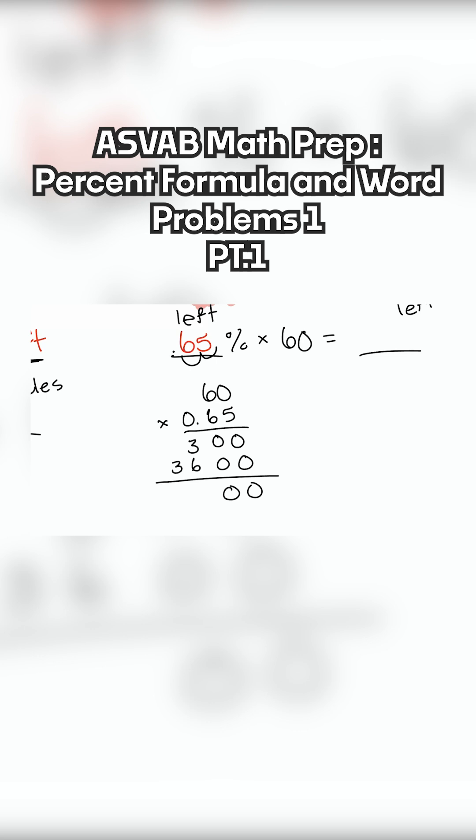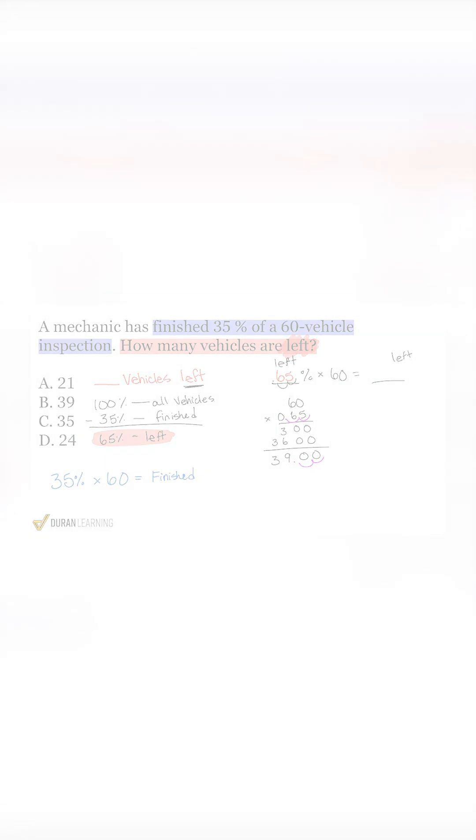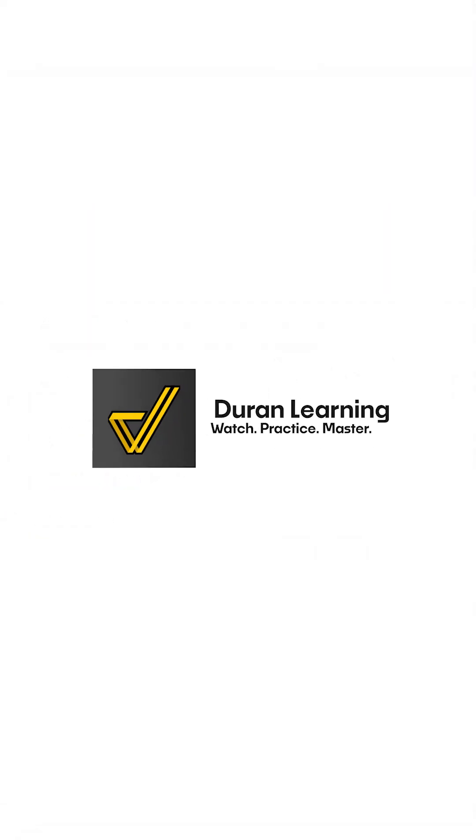We have 0, 0, 9, and 3. So it's not 3,900 because we have to move one two decimal places back. And that'll be one two decimal places there. Making it so that we have 39 vehicles left in this.